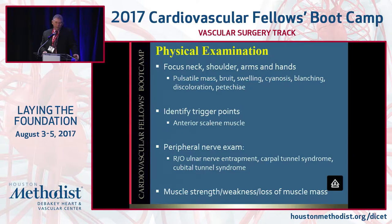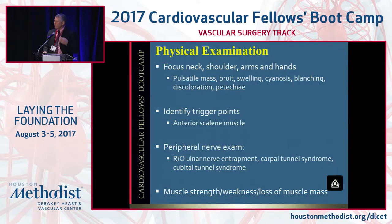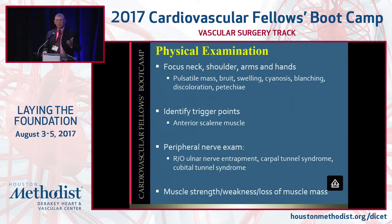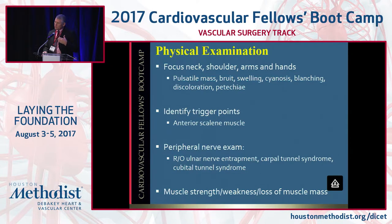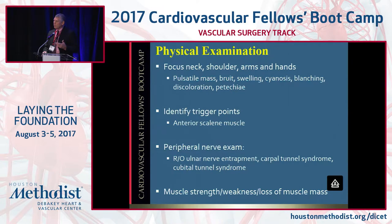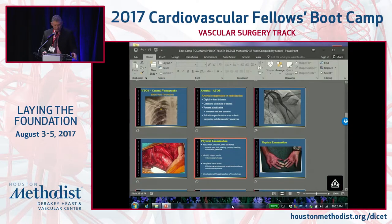On exam, what are you trying to look for? You want to focus on the neck, shoulder, arms, and hands, looking for a mass or bruit. Are they swollen? Do they have cyanosis? Are they blanching, with discoloration and petechiae? Because you have to exclude Raynaud's, you have to exclude a cardiac embolus, and you have to exclude all intrinsic obstructive pathologies. Find a trigger point on their anterior scalene, or you can do it at Erb's Point, which is on the lateral border of the sternocleidomastoid muscle above the clavicle.